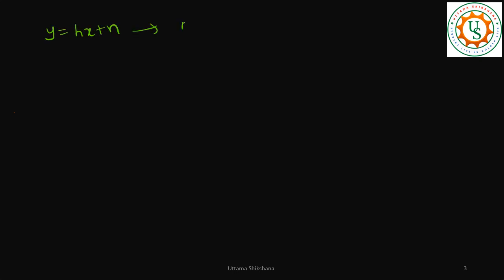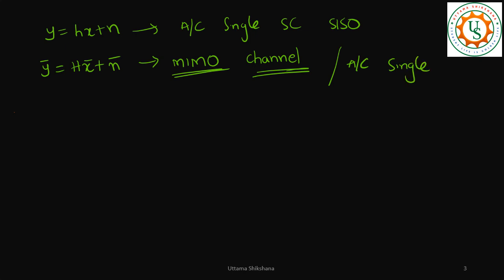Till now I have taken the equation y equals hx plus n across a single subcarrier for a SISO case. But in the upcoming video let me talk about MIMO channel estimation, how to do that, what are the strategies used, in which case how does it become y_bar equals hx_bar plus n_bar. Such kind of equation will be there across multiple subcarriers.